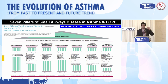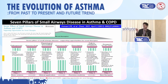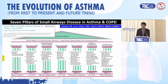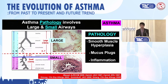If there's one publication you want to read about small airways disease, it's the seven pillars. Each pillar has the letter P: from pathogenesis to pharmacology to physiology to pharmaceutics to phenotyping, path to regulatory acceptance, and prospects for the future. I'm going to take aspects from this. So let's start.